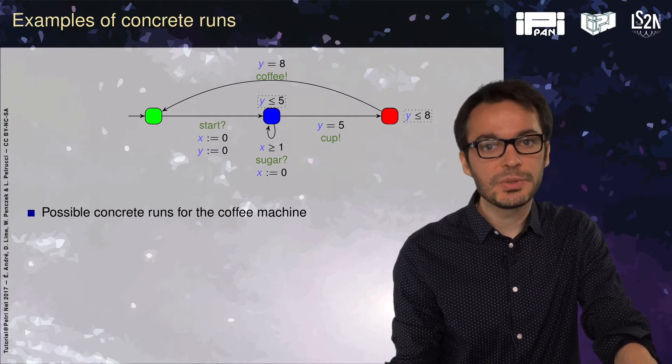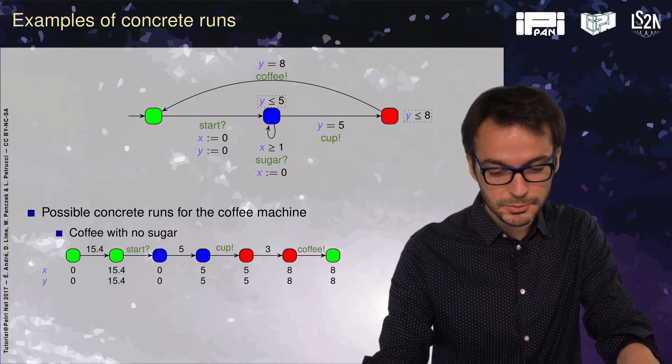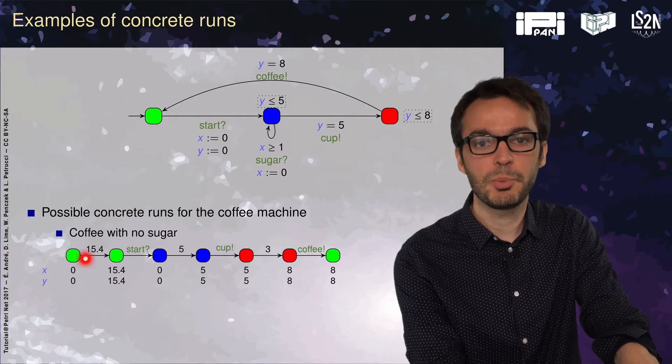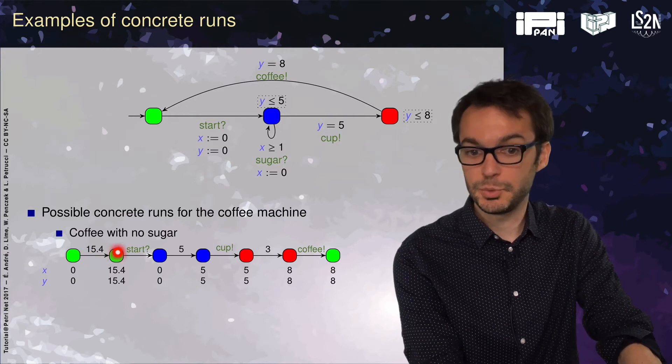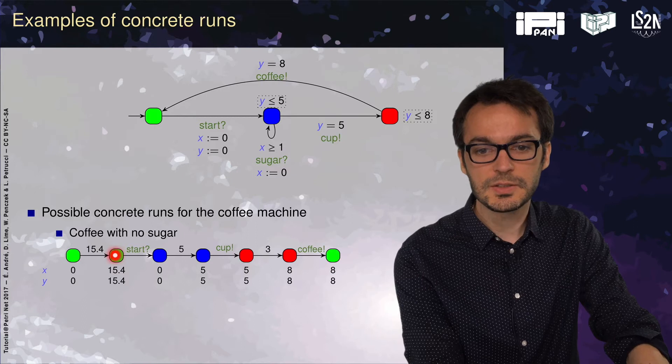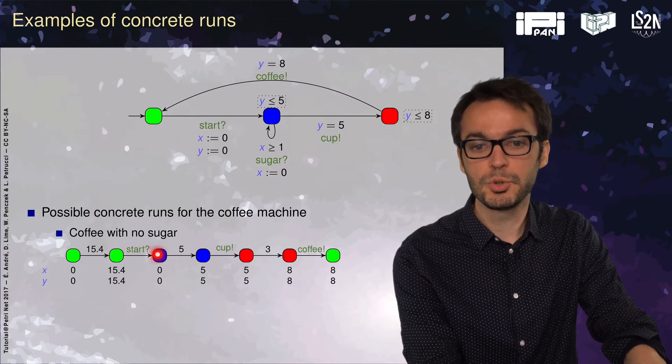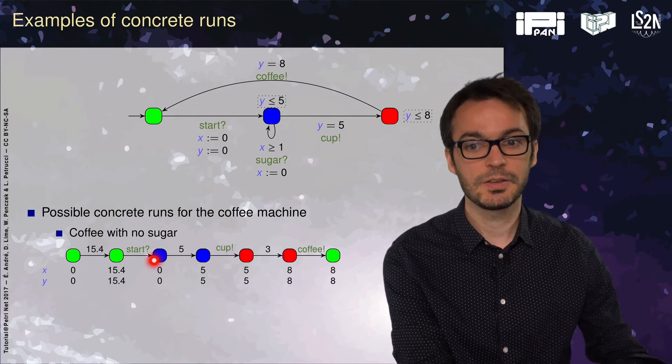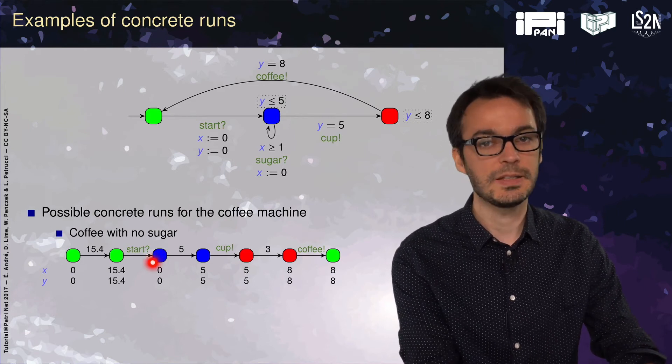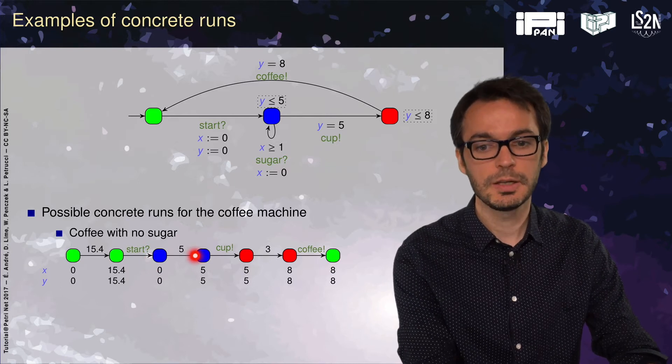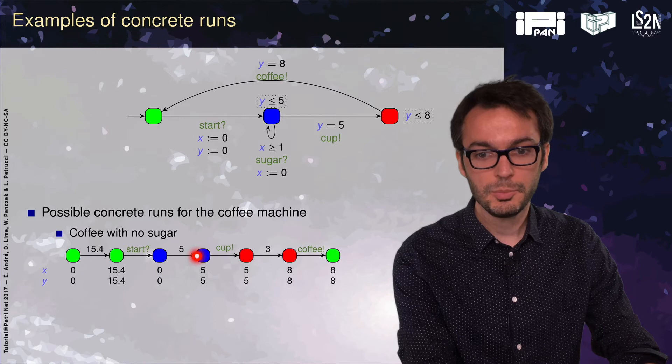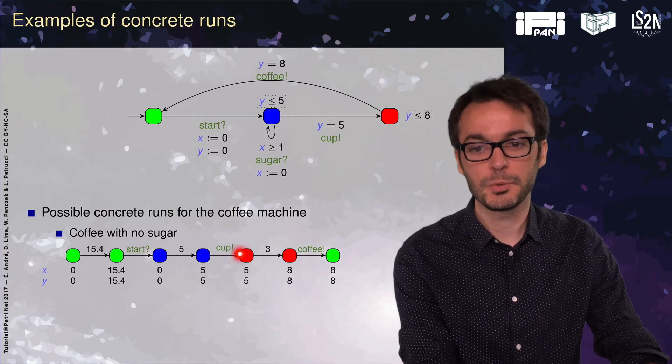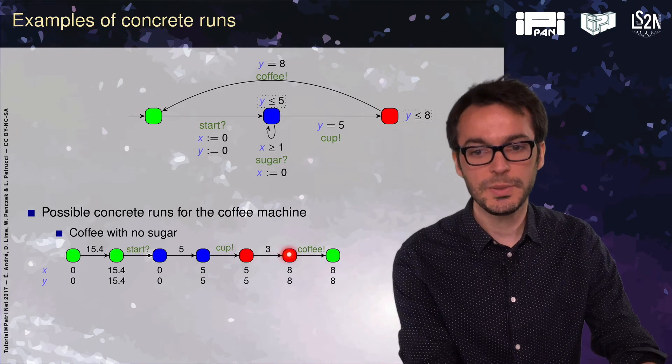Possible concrete runs for this machine: if you want a coffee with no sugar, you can stay as long as you want in the green location, for instance 15.4 time units. Then somebody presses the start button, so you're in the blue location. You don't want any sugar, so you don't press the sugar button. You just stay until the guard y equals 5 is satisfied. Then you get your cup. You wait until y equals 8 is satisfied, so you wait three time units and get your coffee.